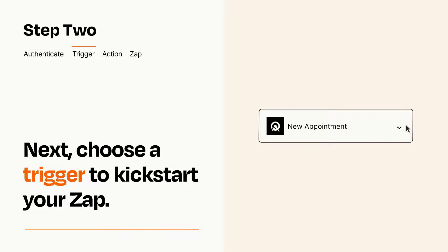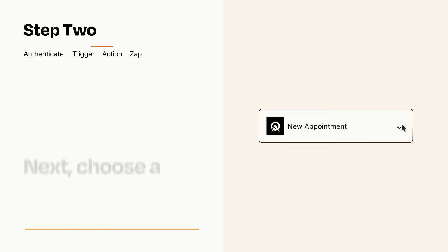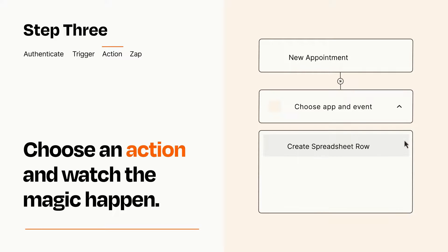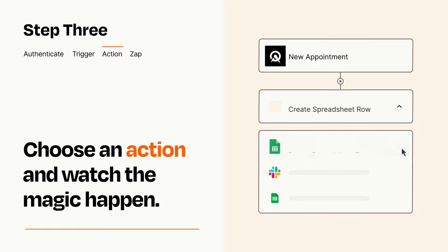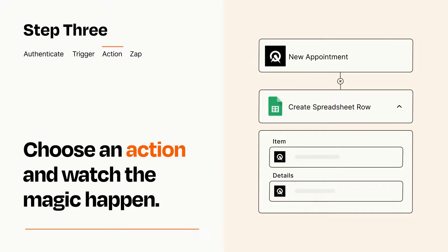This last part is where the magic happens. Choose the action you want to happen in your target app. You'll see a bunch of fields where you can specify the details of your Zap. You can type free form text or pull data in from your trigger step as needed.